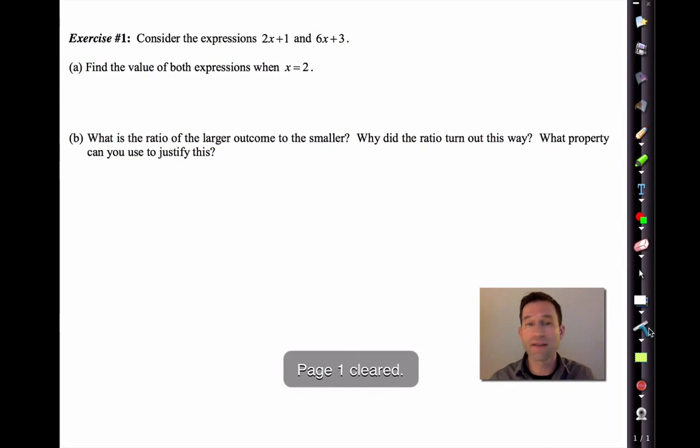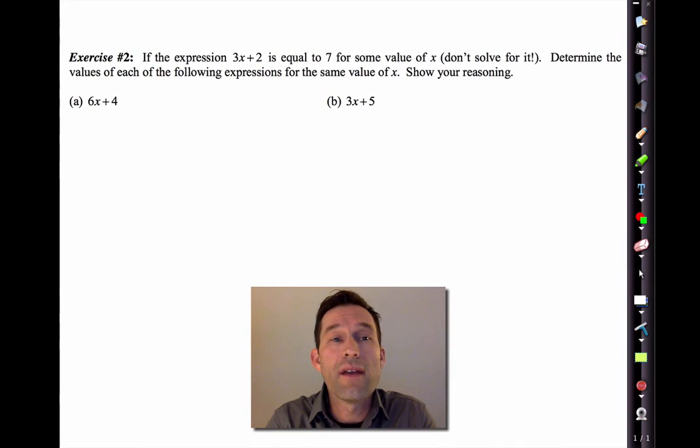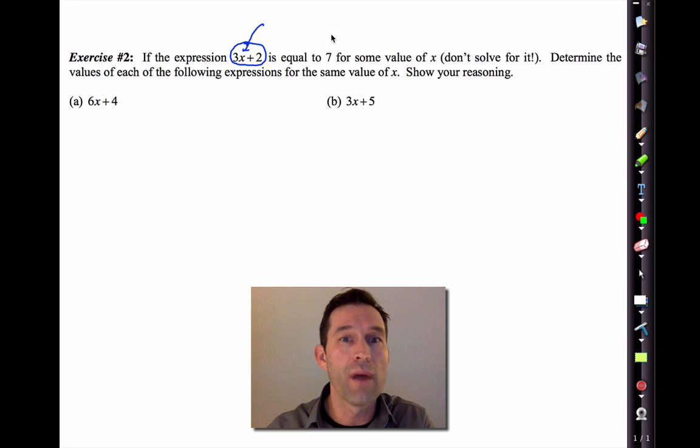Let me scrub out my text, and why don't we go on to the next exercise. Exercise number 2 gets into kind of the heart of the lesson, so I'd like to take a little bit of time on it. Alright, I'm going to tell you, I'm going to give you an expression, and I'm going to tell you what it's equal to. But I'm not going to tell you the value of x. So in this problem, I'm telling you that we have the expression 3x+2. And for some value of x that I would substitute in here, the expression would end up equaling 7.